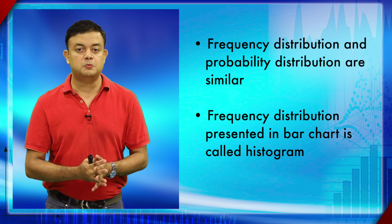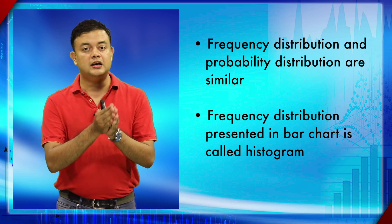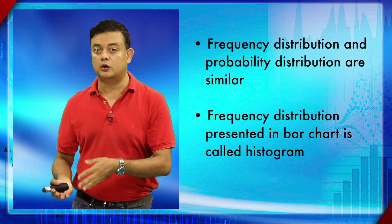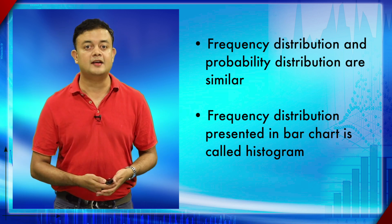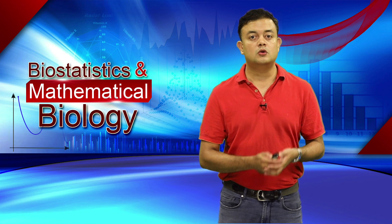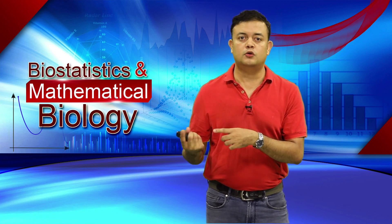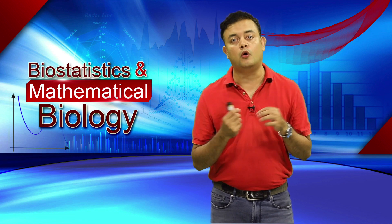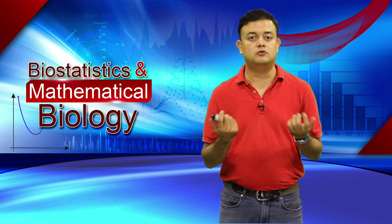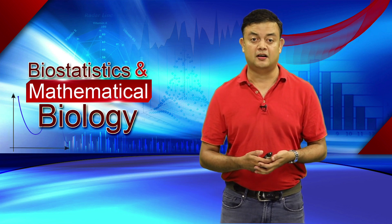A frequency distribution presented as a bar chart is called a histogram, which we will see in the next module. You can present a frequency distribution either in tabular form or visually via a histogram — but never both, as that would create simple data redundancy.